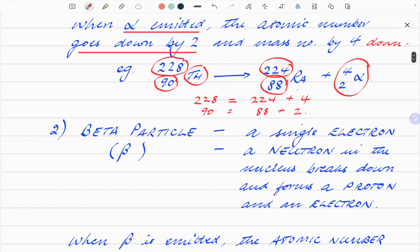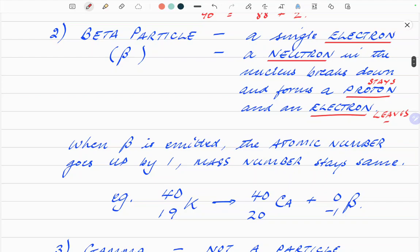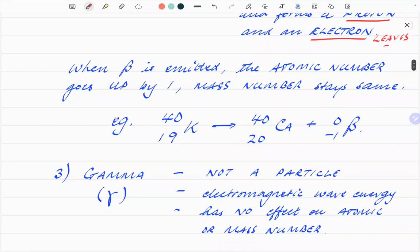Beta particle. It's a single electron. How is it formed? A neutron in the nucleus breaks down and forms a proton and an electron. The proton stays, the electron leaves. Very simply put. When a beta is emitted, the atomic number goes up by 1 because a new proton is created.